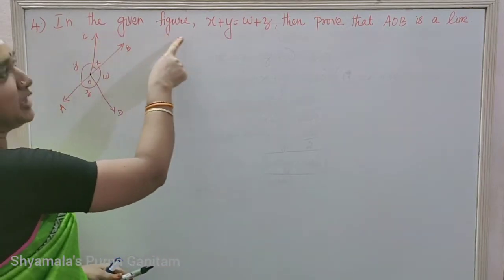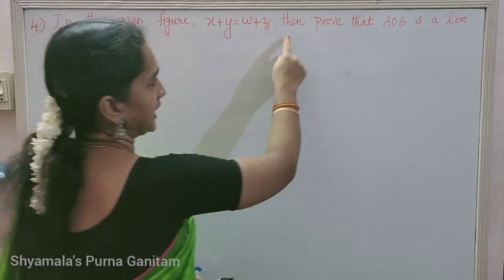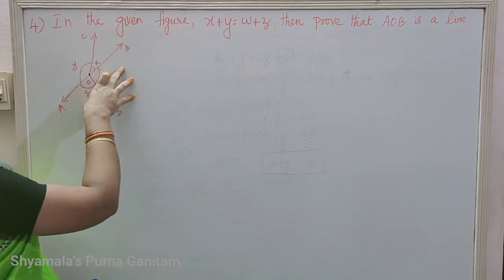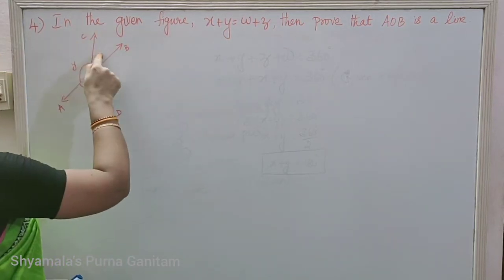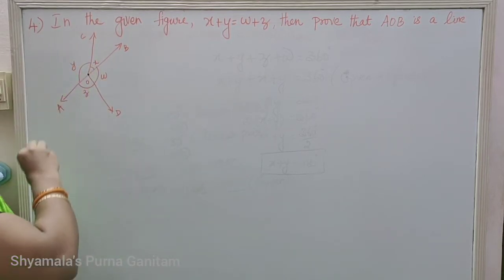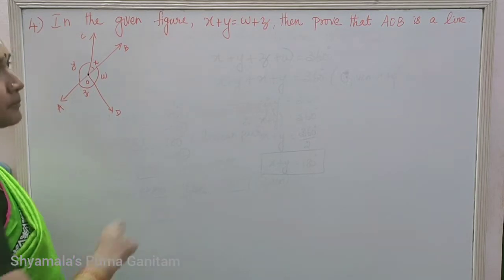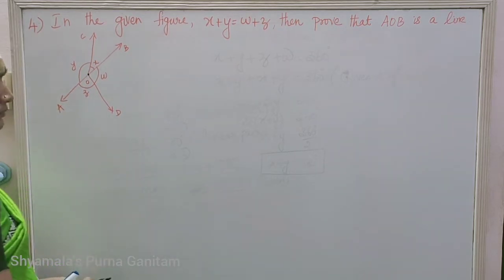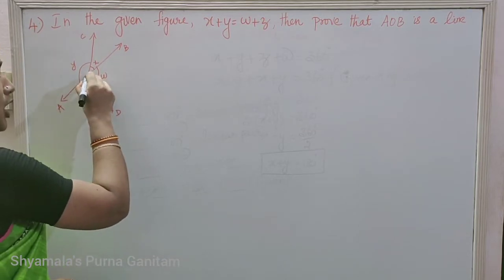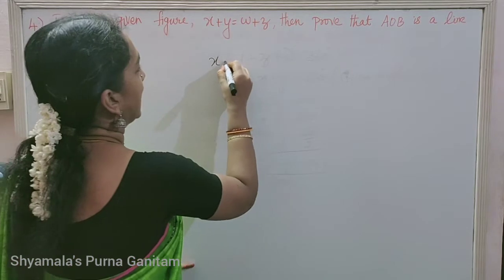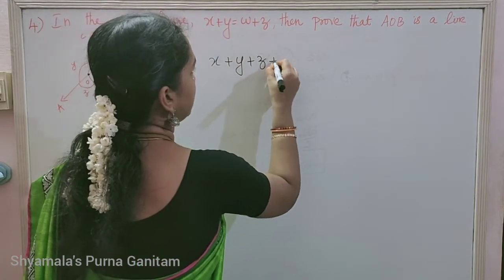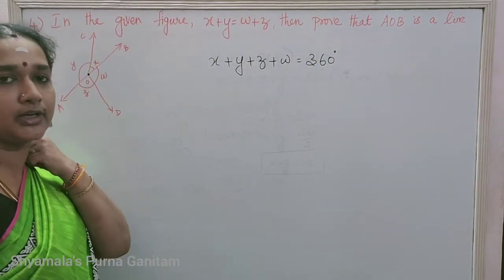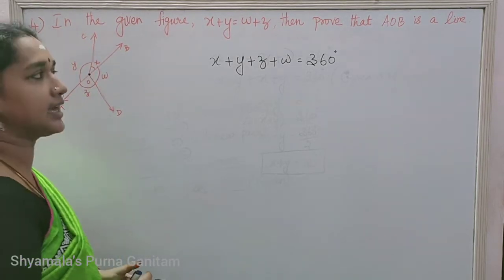Fourth question: in the given figure X plus Y equals W plus Z. Prove that AOB is a straight line. So we need to prove that AOB is 180 degrees. Angles X, Y, Z and W are all around a center point. All angles around a point sum to 360 degrees.